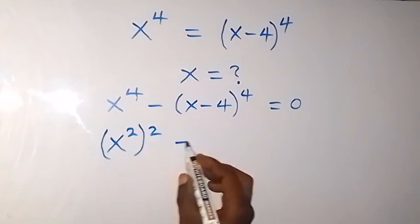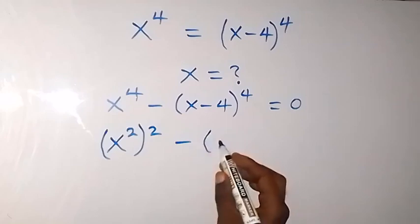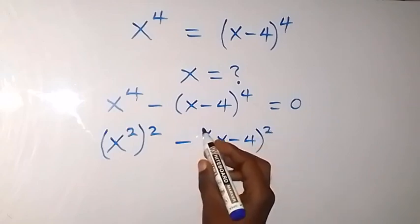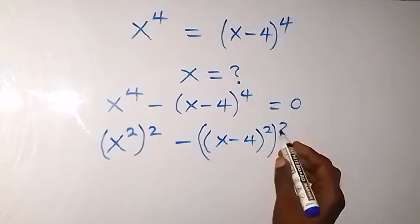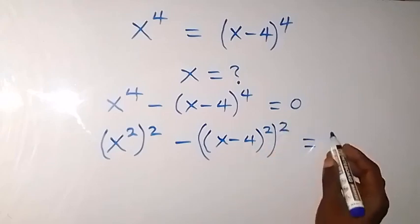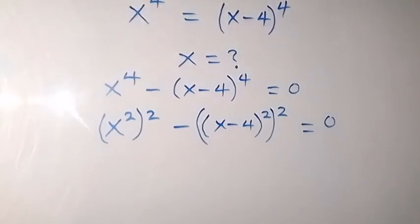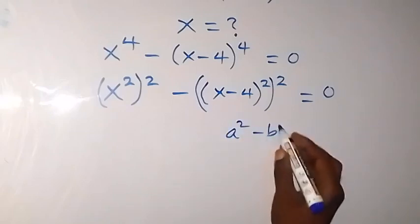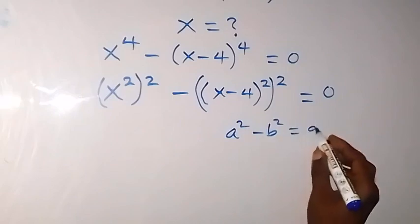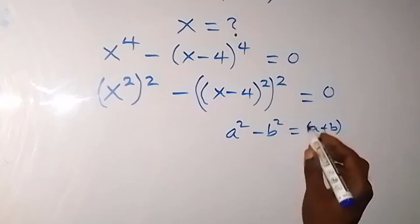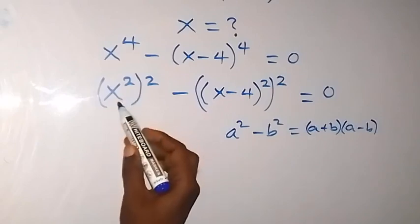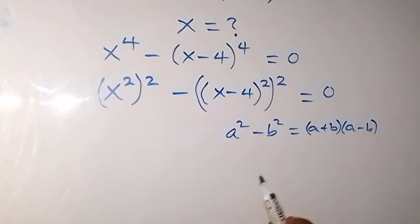We also square here, minus (x minus 4) squared, also squared, which equals 0. This follows the pattern for the difference of two squares, that is a squared minus b squared. When we follow this, here a is x squared and b is (x minus 4) squared.